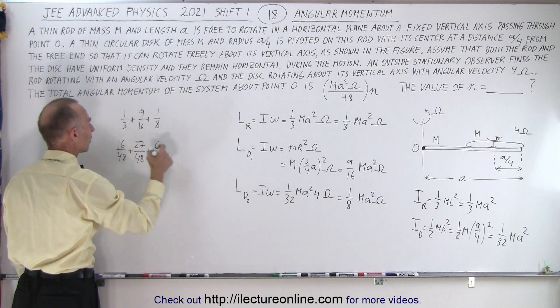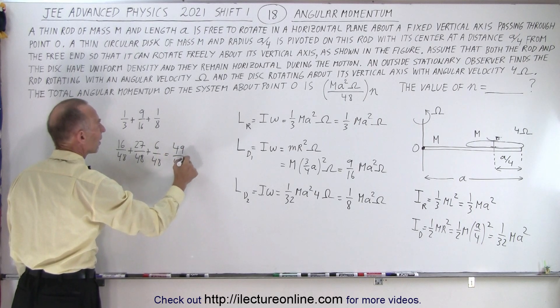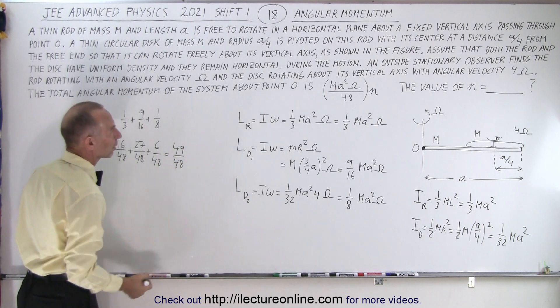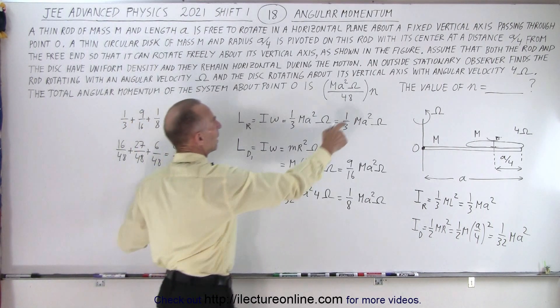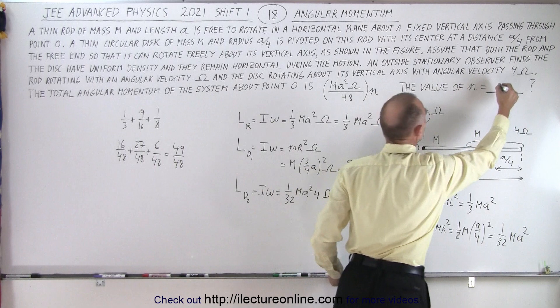49 over 48 times of course m a squared times omega. So we need 49 over 48. So n must therefore be 49.